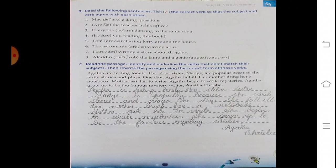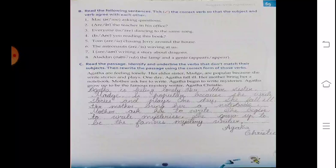So we write: Agatha is feeling lonely. Her elder sister Maggie is popular because she writes stories and plays. One day she falls ill. Her mother brings her a notebook. Mother asks her to write. She begins to write mysteries. She grows up to be the famous mystery writer, Agatha Christie.